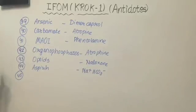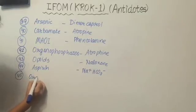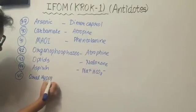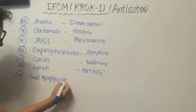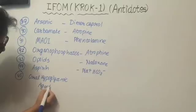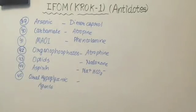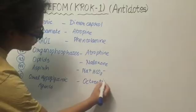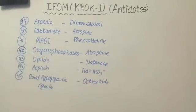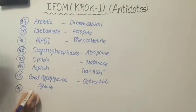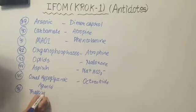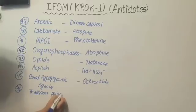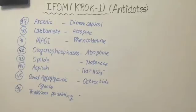Our 45th drug is oral hypoglycemic agents. The antidote of oral hypoglycemic drugs is octreotide. Our last drug is thallium poisoning. The antidote of thallium poisoning is Prussian blue.